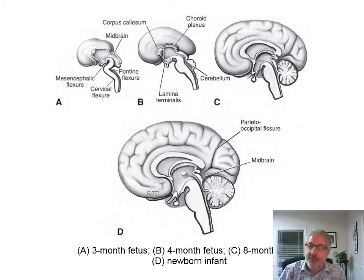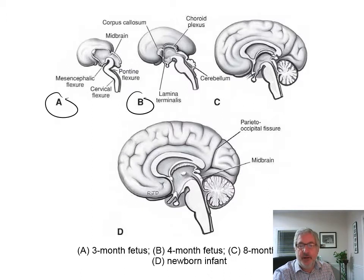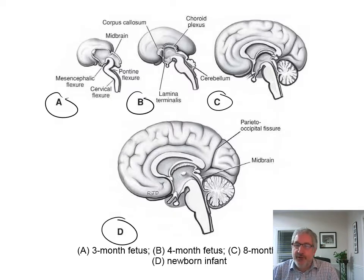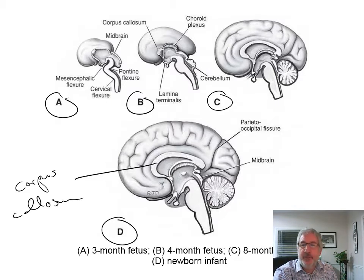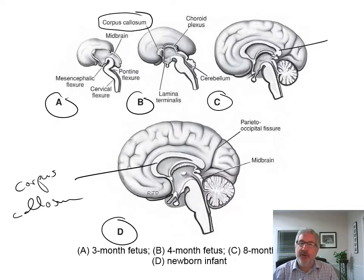Here are sagittal sections of the same thing. This shows three months, then four months, then eight months, and then a newborn. You can see development of a smooth brain into one having gyri, and you see the corpus callosum and all those things develop. Here's your corpus callosum — that whole arch. When you go back to four months, it's really hard to pick out, but there's a little bit of it there. You can also see a little bit of the choroid plexus.